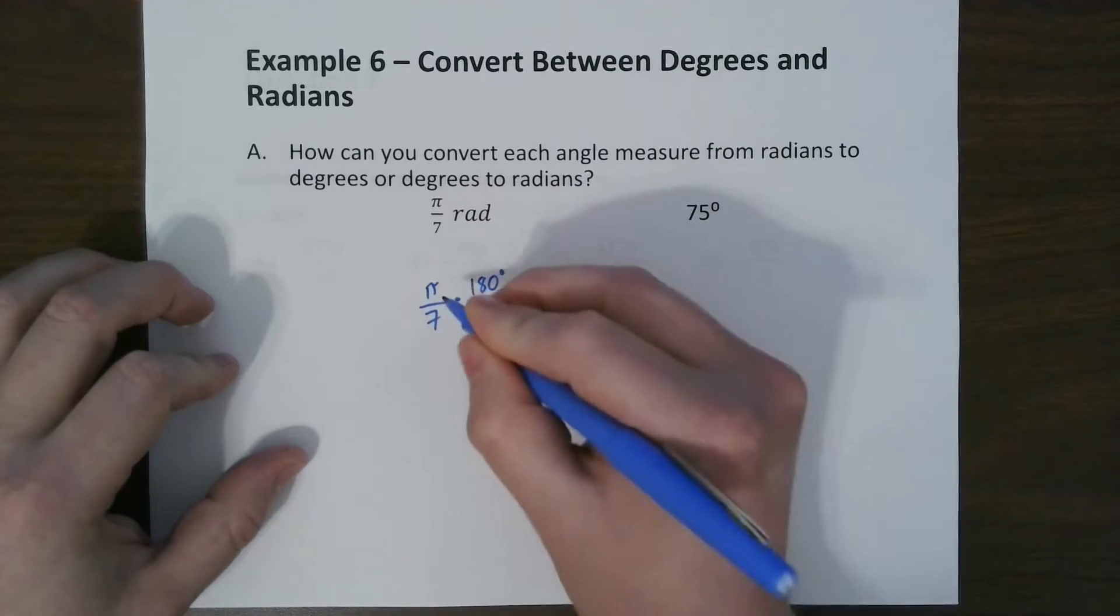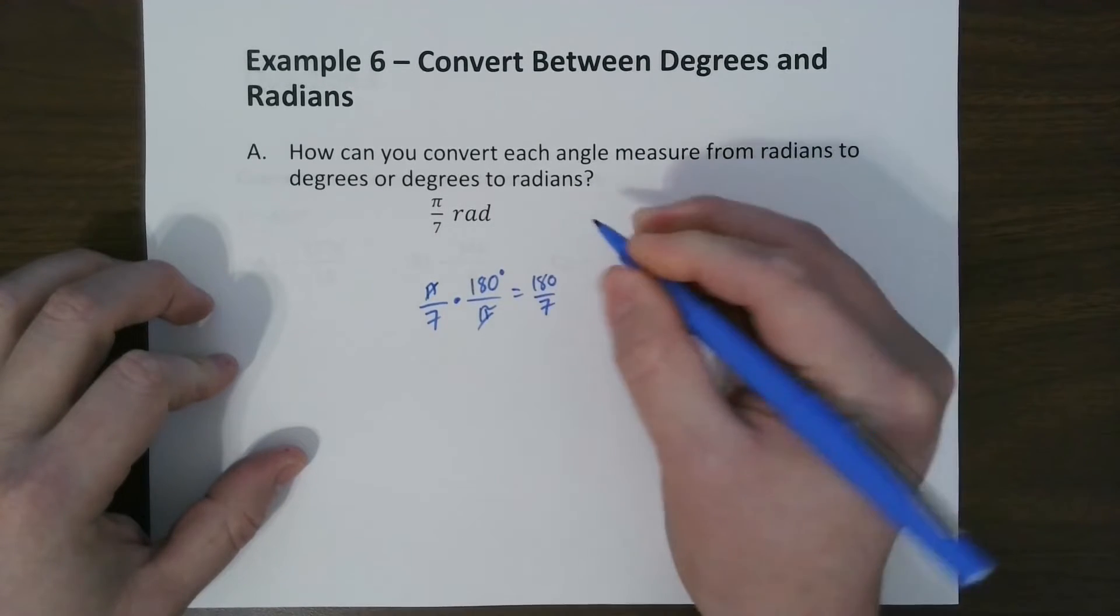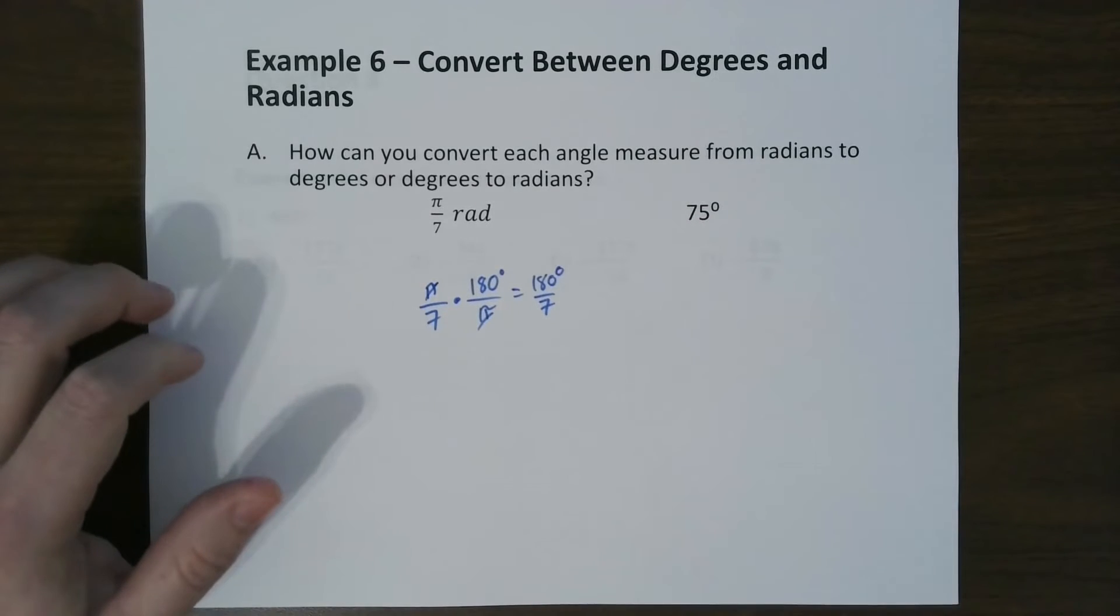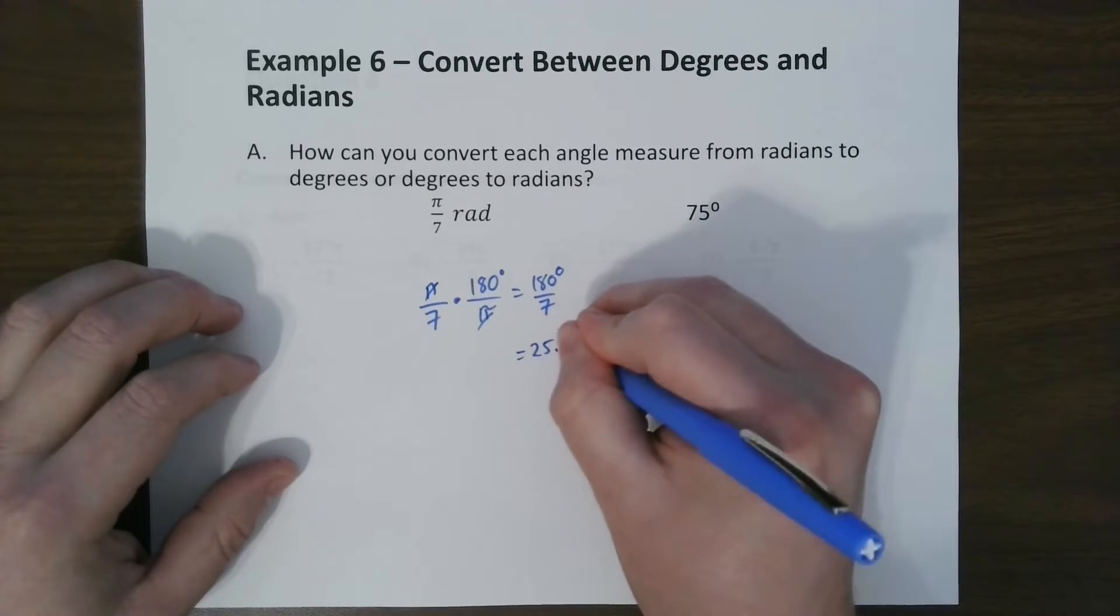we're going to multiply by 180, because we want degrees, over pi. So these cancel. So the answer would be 180 over 7 degrees, which ends up being about, because it's degrees, you actually want the number 25.7 degrees.